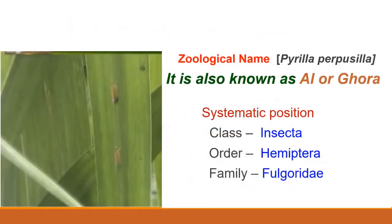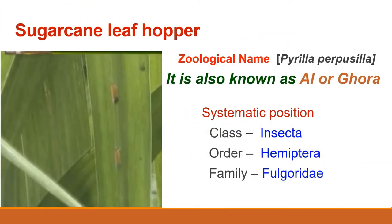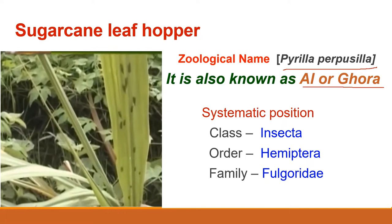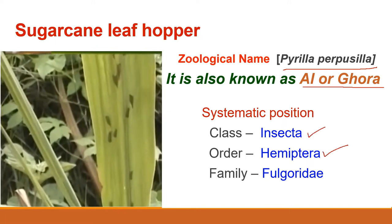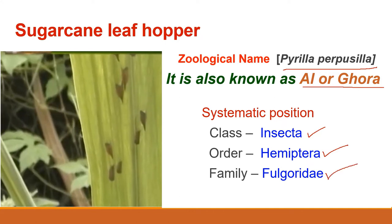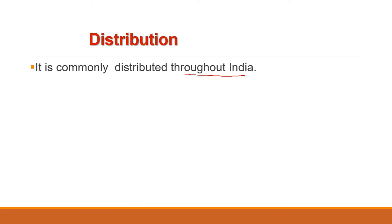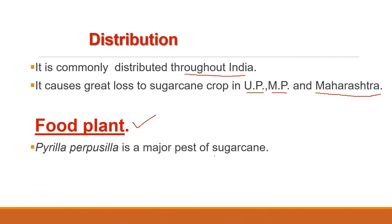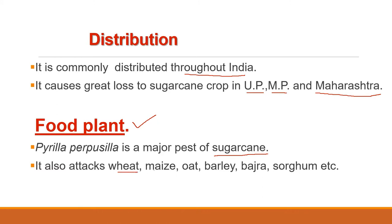First, we will study the sugarcane leafhopper or Pyrilla purpucilla, also known as 'al' or 'ghura'. It belongs to class Insecta, order Hemiptera, family Fulguridae. It is a serious pest of sugarcane, commonly distributed throughout India, causing great loss in Uttar Pradesh, Madhya Pradesh and Maharashtra. The major food plant is sugarcane but it also attacks wheat, maize, oat, barley, bajra and sorghum.